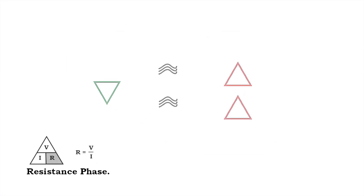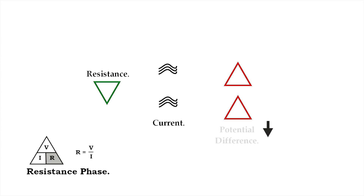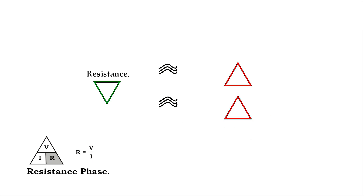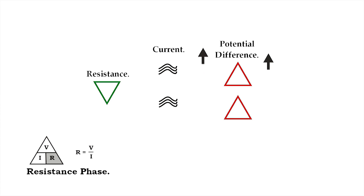Phase 1 is the resistance phase and it has two parts. If resistance is constant — it is the variable that does not move — when current decreases or goes down, potential difference also decreases or goes down. If resistance is constant and current increases or goes up, potential difference must also increase or go up.